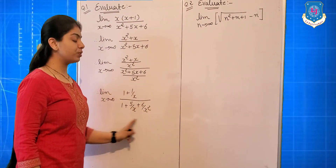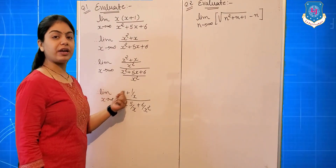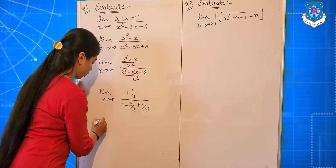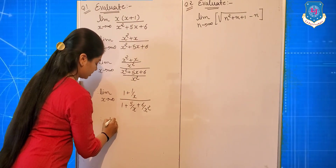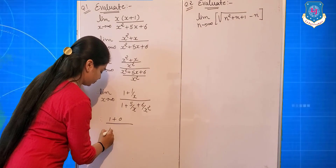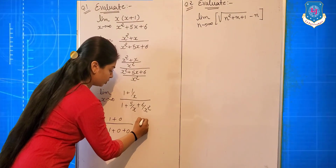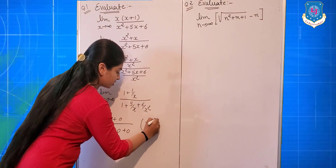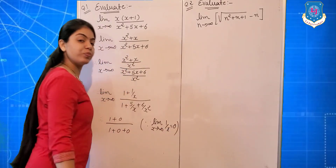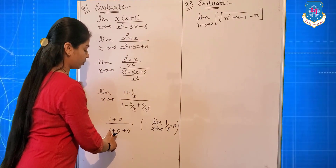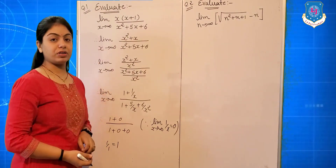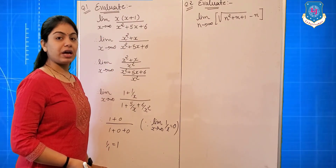Now we apply the standard form: limit x tends to infinite, 1 upon x = 0. Putting the limit, the numerator becomes 1 + 0 and the denominator becomes 1 + 0 + 0. So the answer is 1 upon 1, which equals 1. It is a simple question.